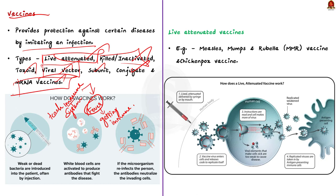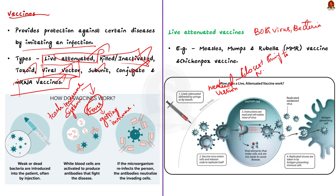Live attenuated vaccines can fight against both viruses and bacteria. They contain weakened versions of the living virus or bacteria, and because they are weakened, they do not cause severe disease in people with healthy immune systems. Live attenuated vaccines are the closest thing to a natural infection, so they are attributed as good teachers for the immune system. Examples include the MMR (measles, mumps and rubella) vaccine and the chickenpox vaccine.